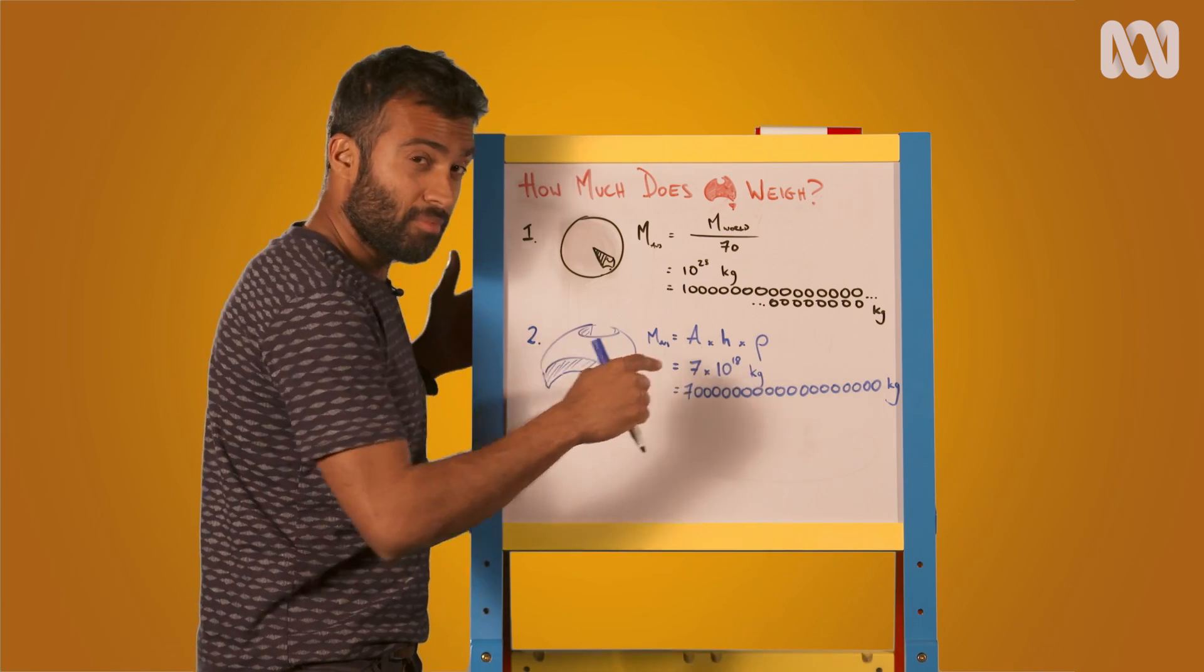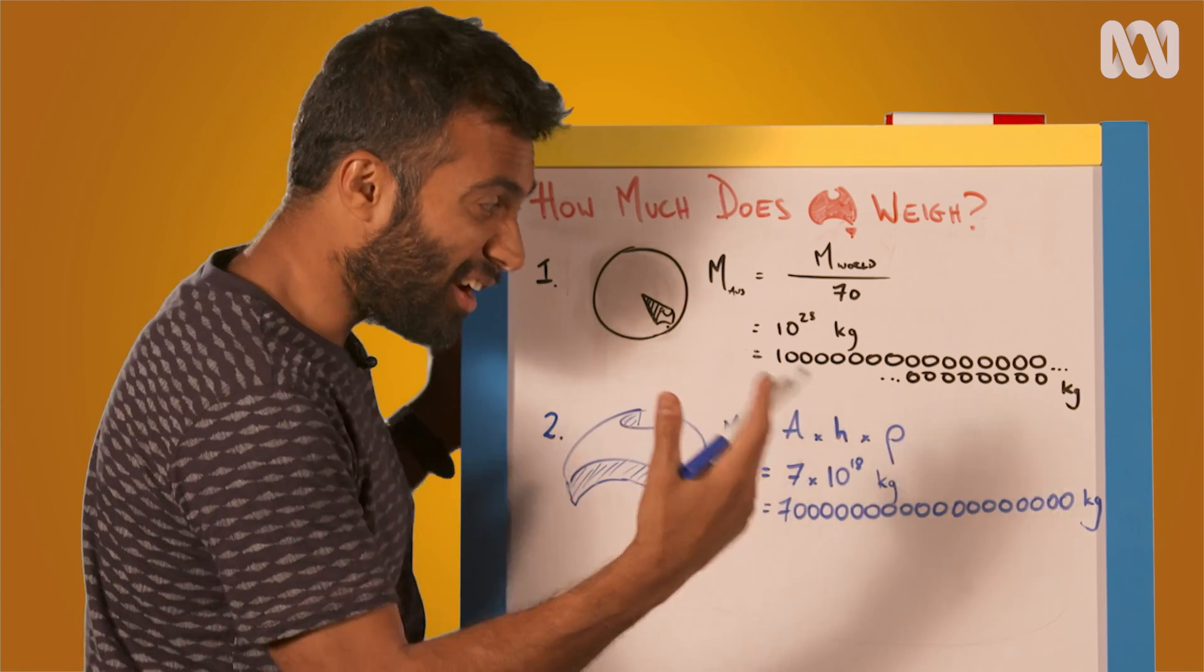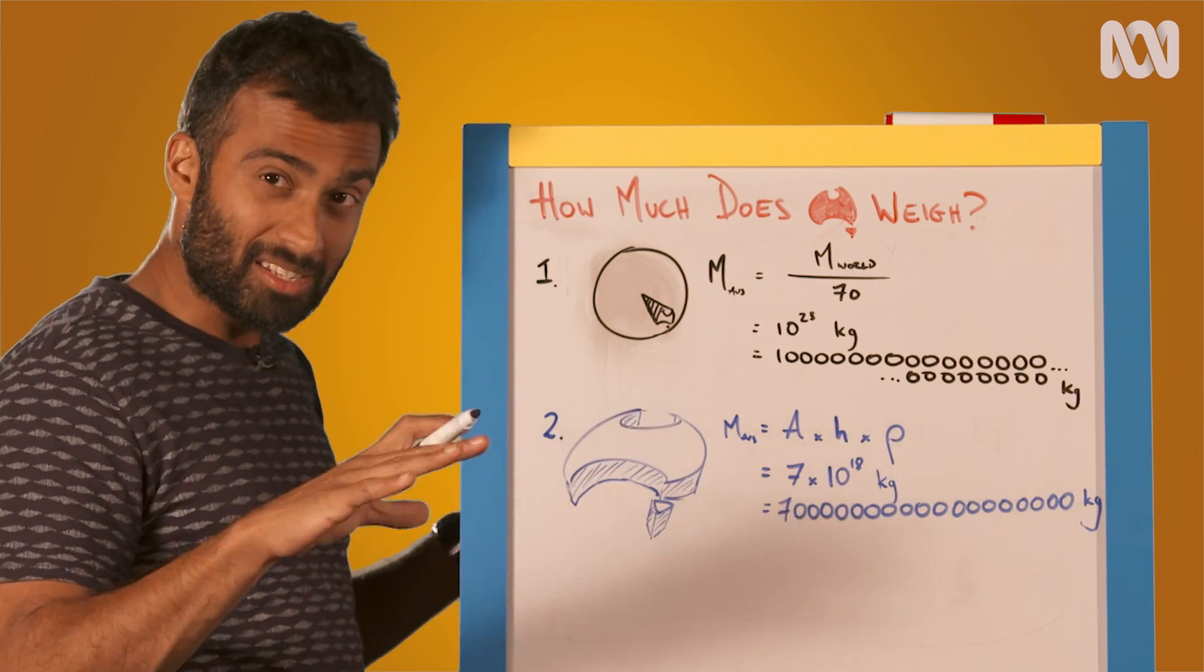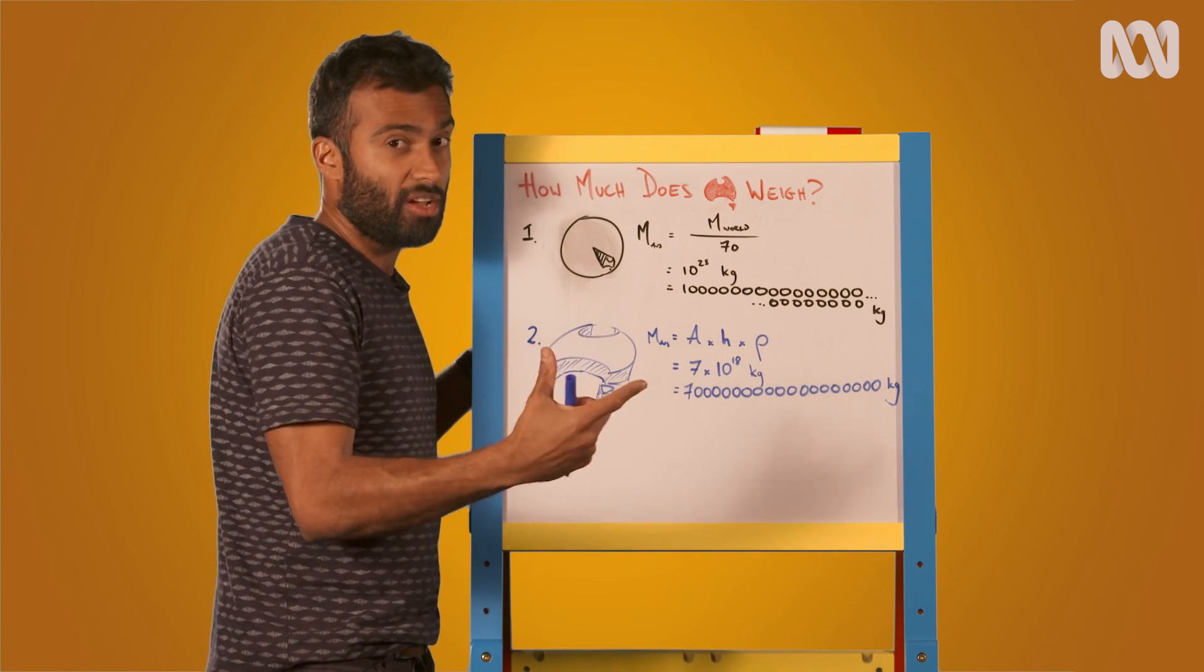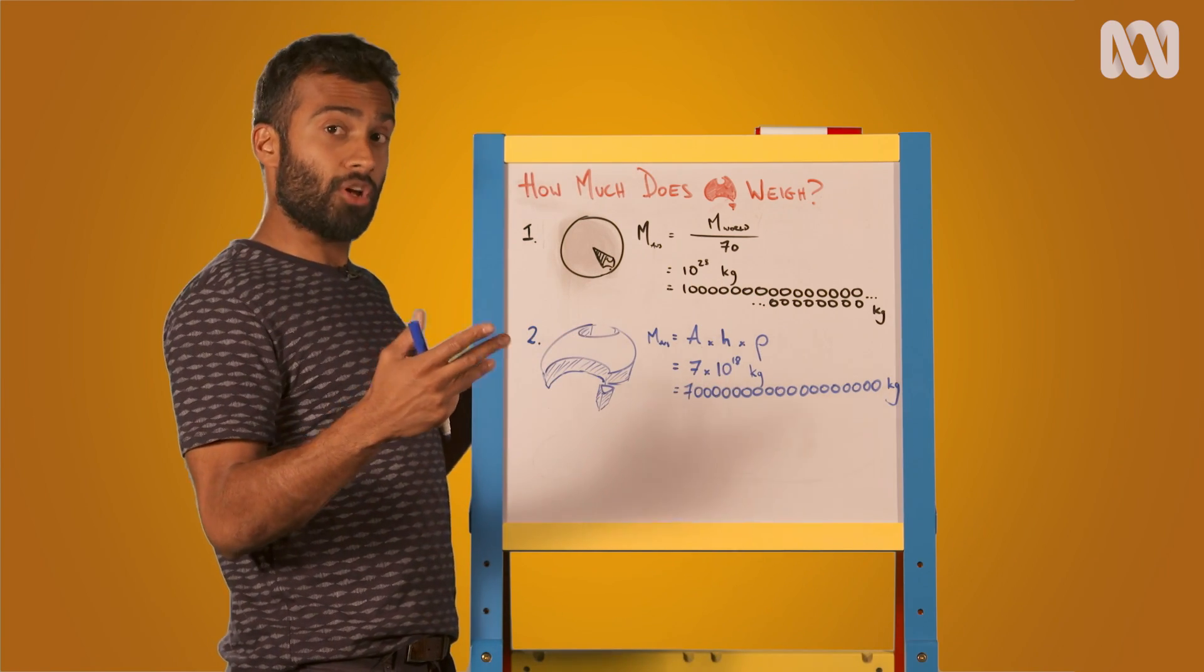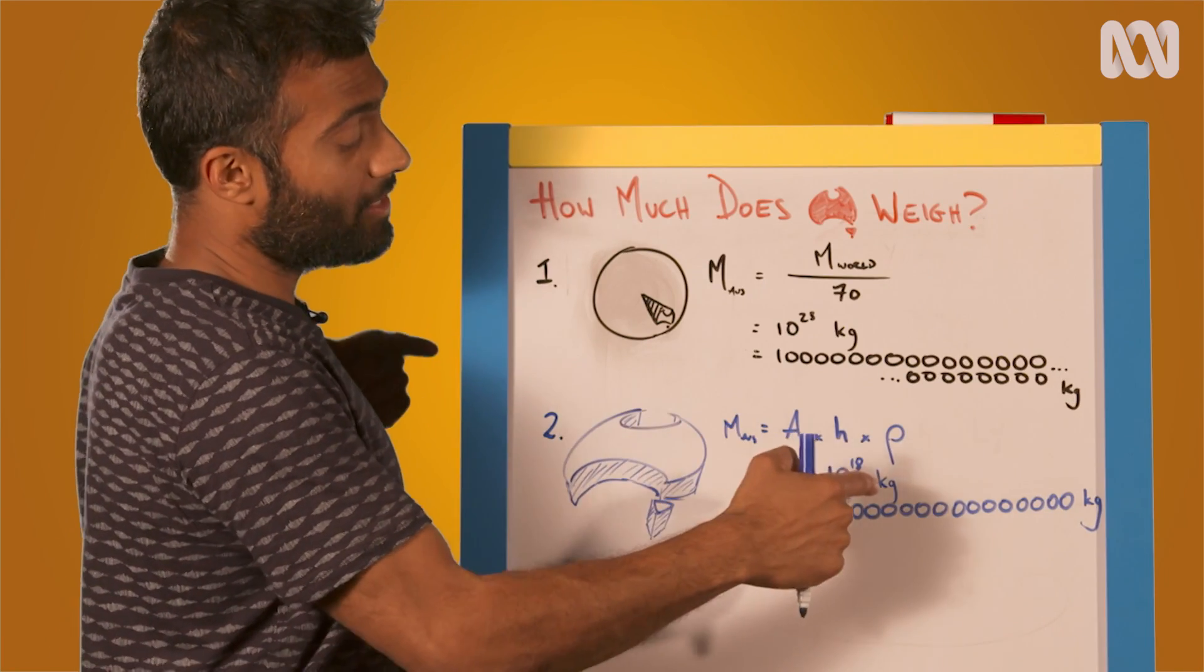If we take Australia's area, 7.7 million square kilometres, and multiply that by the average height of Australia, 330 metres above sea level, and multiply that volume by the average density of the rock in Australia, 2,700 kilograms per cubic metre, we can work out the weight of Australia to be 7 times 10 to the 18 kilograms.